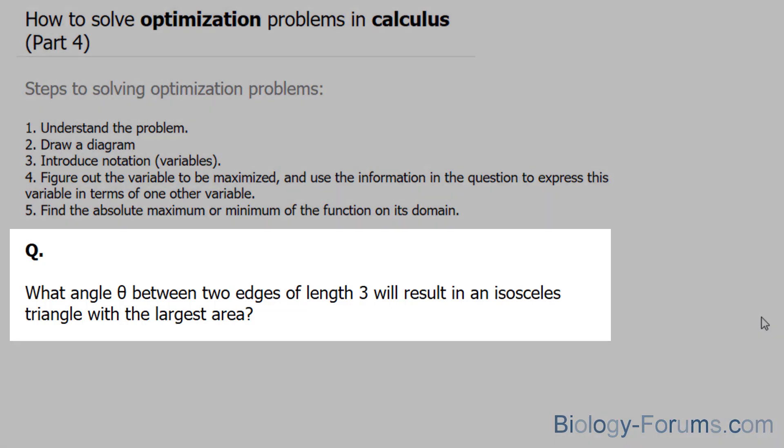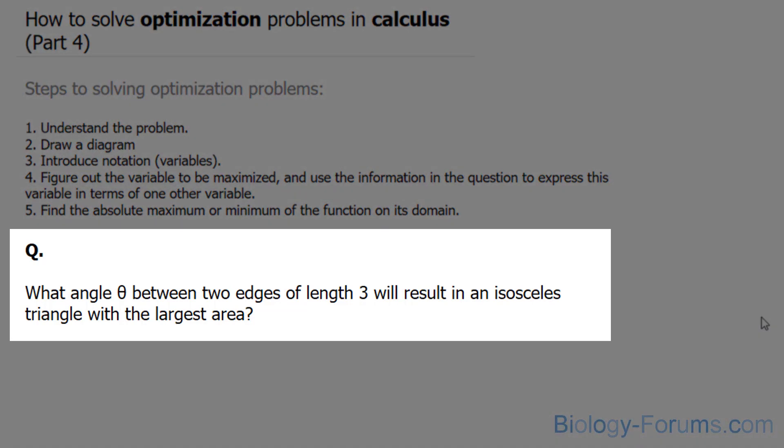The question reads: what angle theta between two edges of length three will result in an isosceles triangle with the largest area?